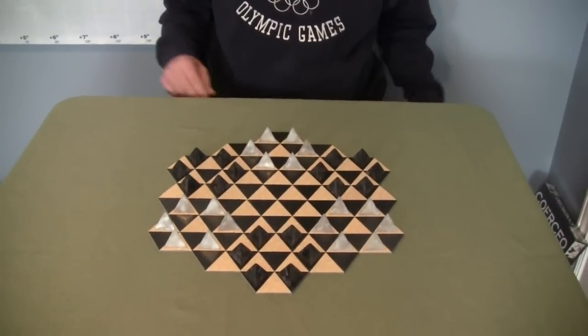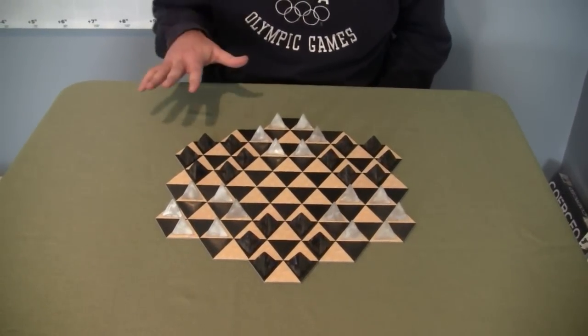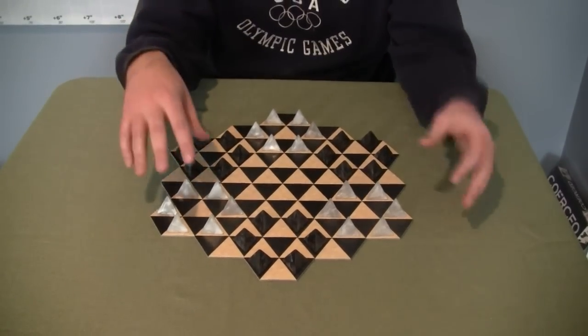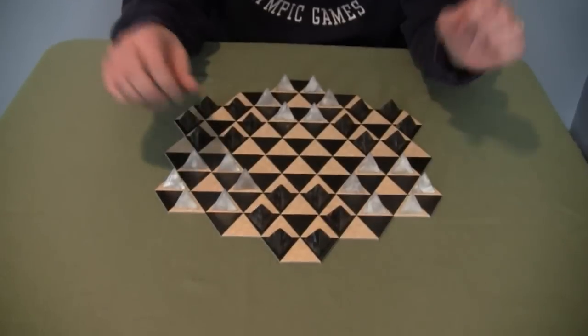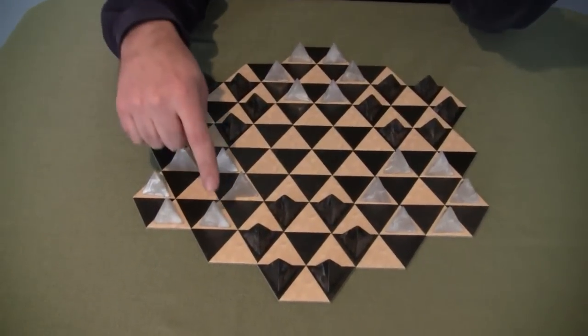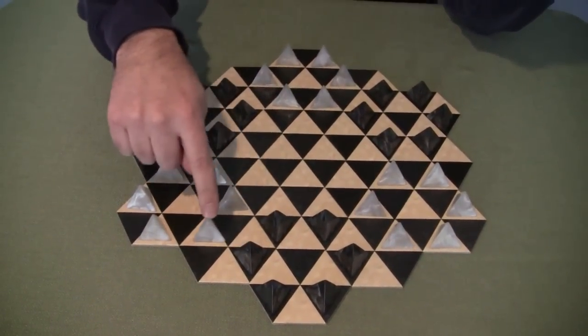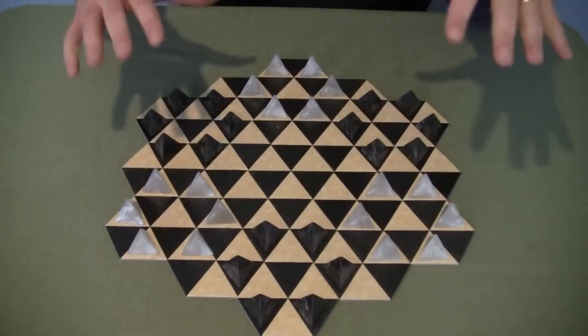In Coercio, what you're trying to do is get rid of the other player's pieces. One's going to be white, one will be black, and the white pieces can only move on the white spaces, and the blacks can only move on the black spaces.